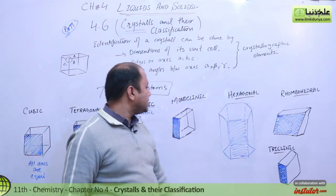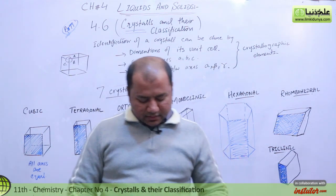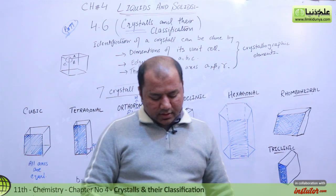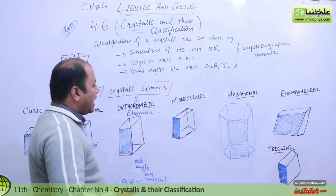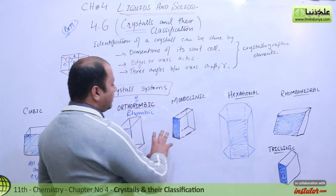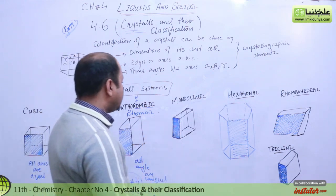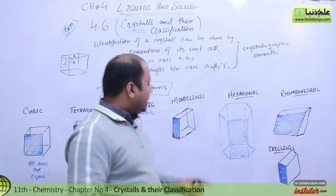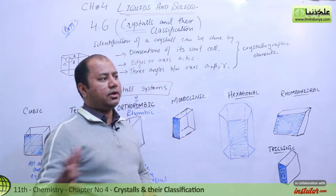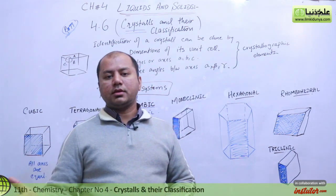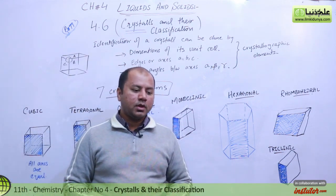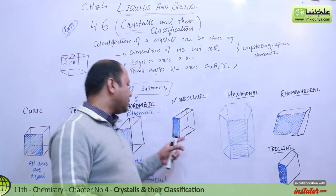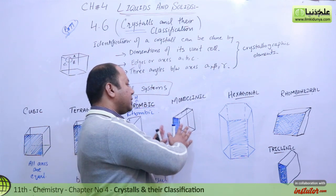Let's move to the monoclinic system. In the monoclinic system, all three axes are unequal. Two of these axes are at right angles to each other, while the third angle is greater than 90 degrees. So one angle is 90 degrees and two angles will differ. Something like a CPU tower shape — it exists in the monoclinic system.